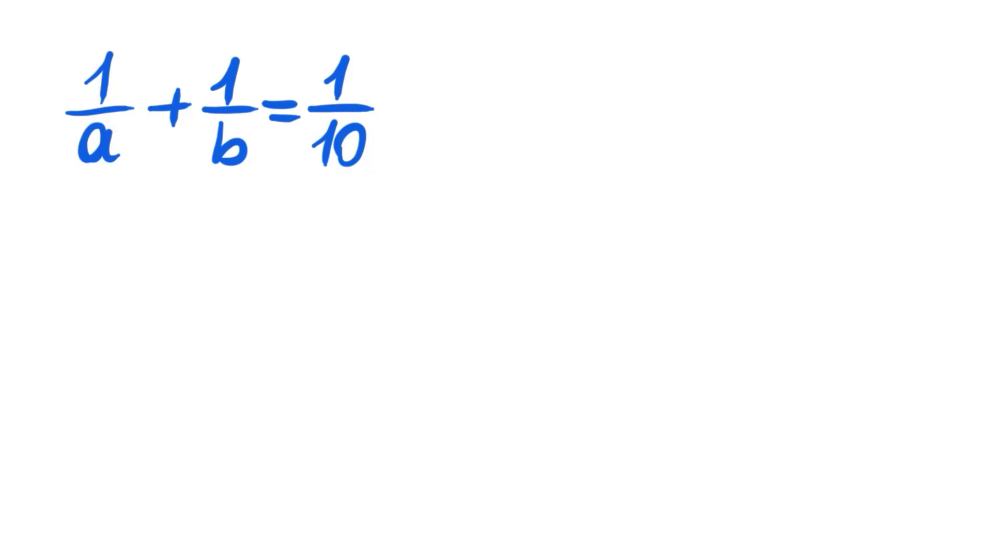Hello everyone, welcome to the channel. We have 1 over a plus 1 over b equals 1 over 10. We want to find the integer solutions for this equation. Now to have a common denominator, let's multiply this by b and this one by a.